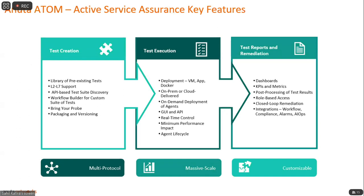There are three steps for running any Active Assurance test: the test creation phase, the test execution phase, and the reporting phase where Atom shows the results. Atom includes a library of pre-built test suites, and network operators can also create their own custom test suites — this works with the workflow builder, where users can easily create their own custom test suites.